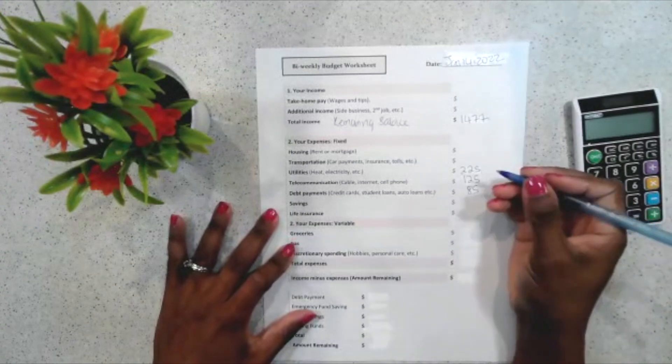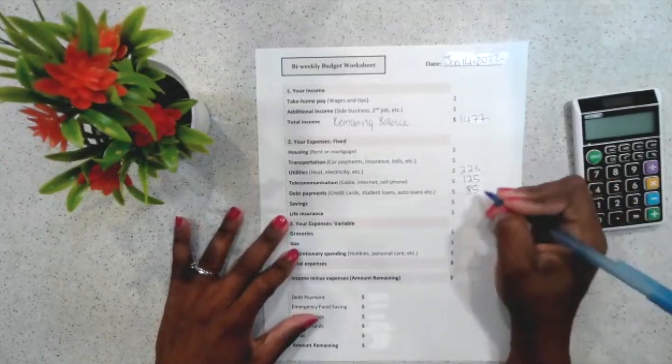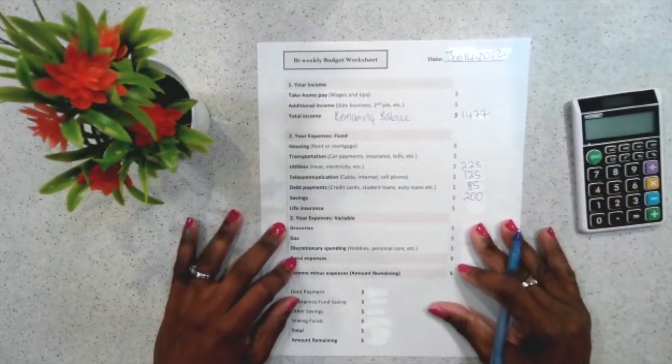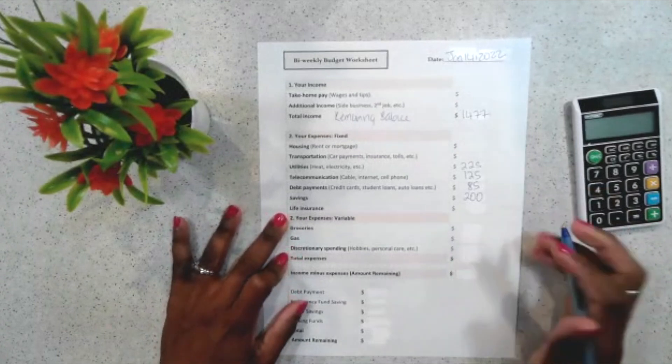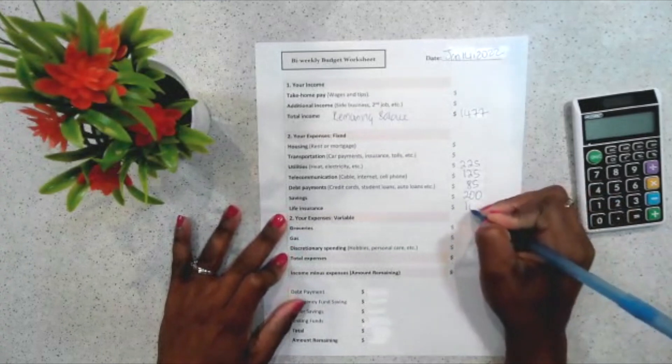Moving along to savings. So, we're saving towards our property tax and vacation. So, that's $200. And then, the next expense, life insurance. So, my budget for that is $106.